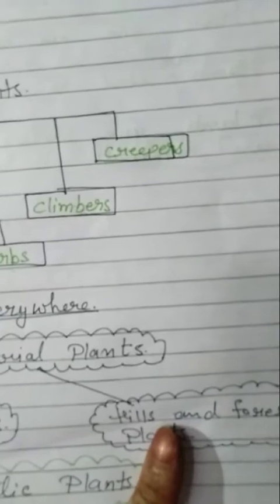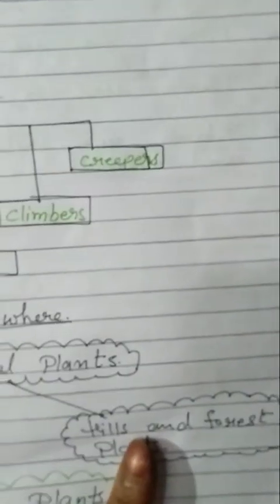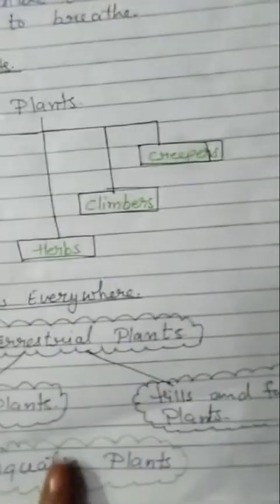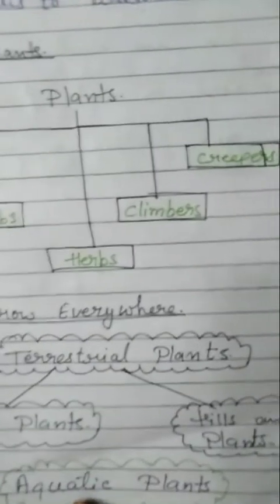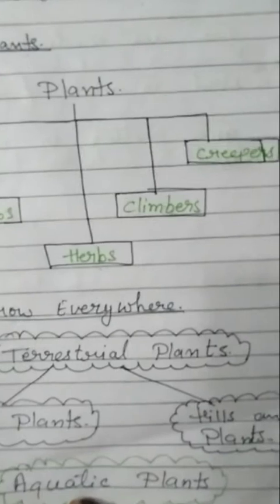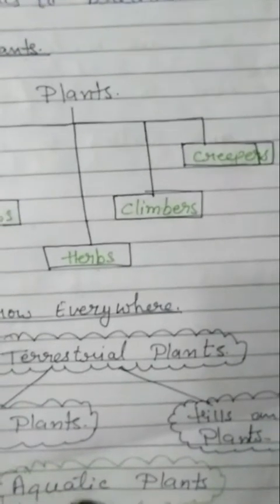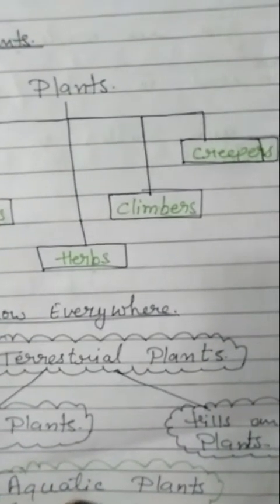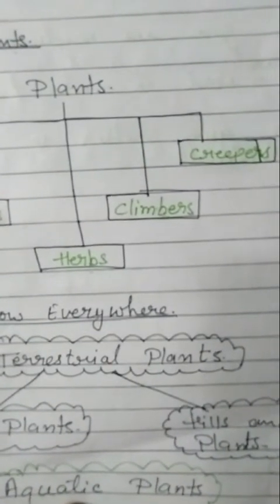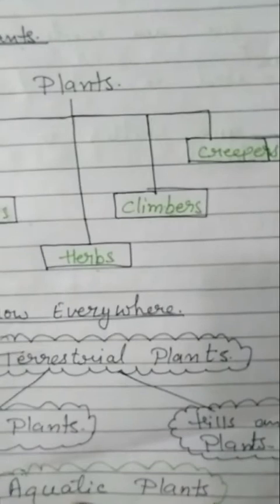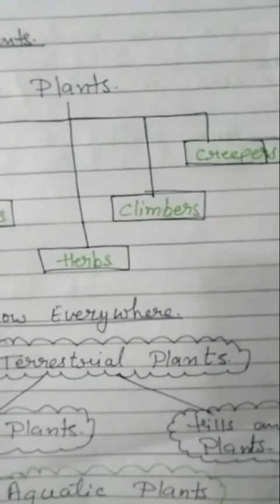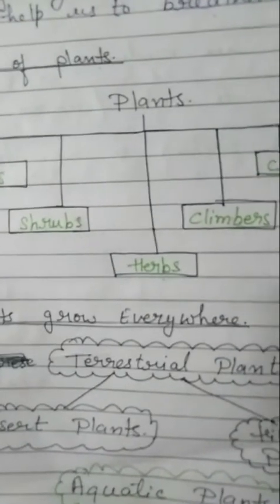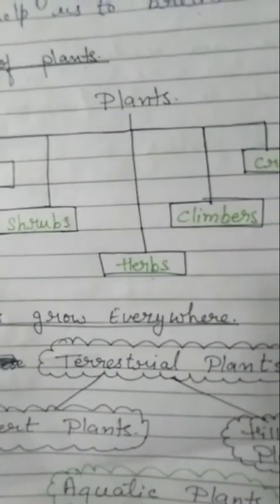The second type is aquatic plants. Aquatic plants are plants that grow in water. These plants live and grow in their specific habitats.